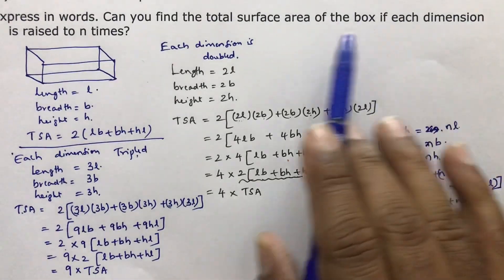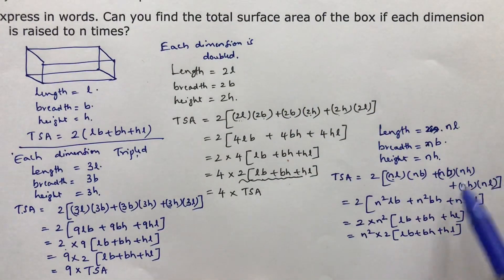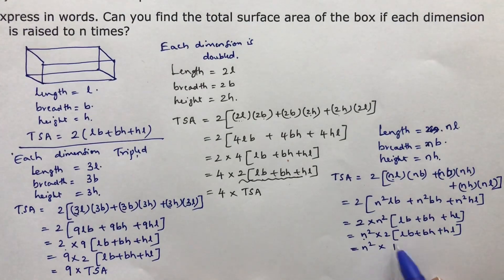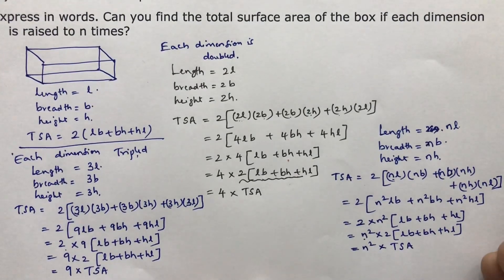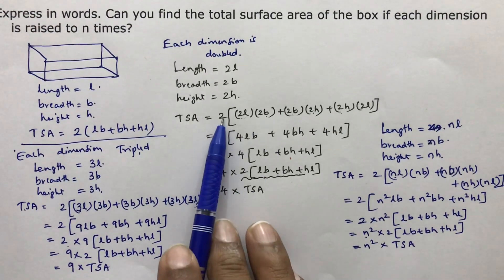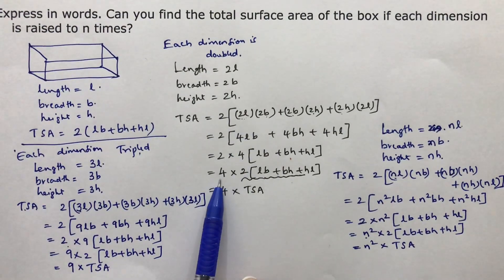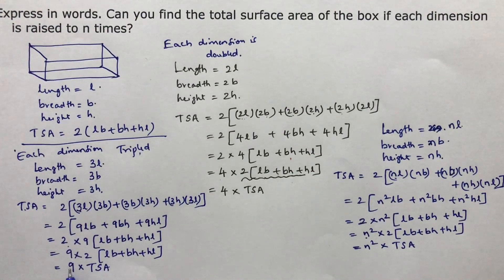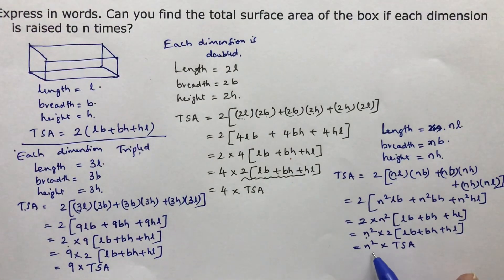So if each dimension is multiplied by N times, the total surface area becomes N squared times the original TSA. If it is doubled, 2 squared equals 4. If it is tripled, 3 squared equals 9. If it is N times, it becomes N squared times TSA.